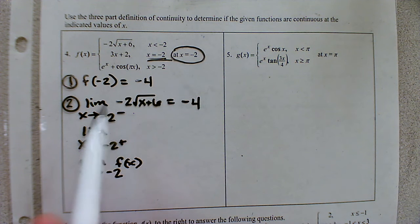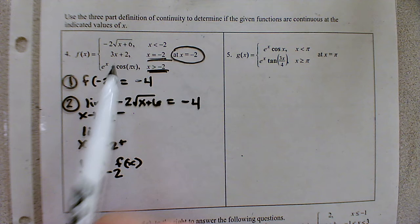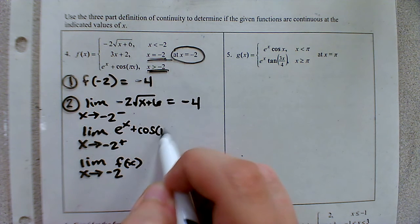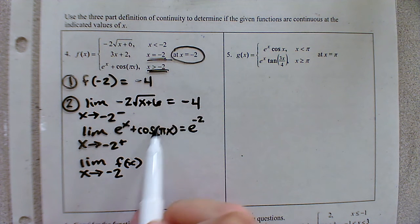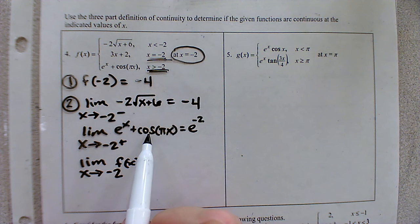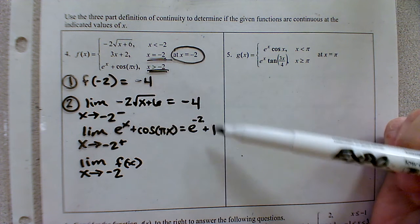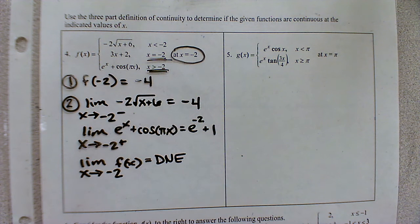Now to check the right-hand side, x values bigger than negative two correspond to the third equation. Direct substitution gives us e to the negative two times cosine of negative two pi. Since negative two pi means traveling backwards a full rotation on the unit circle, we're back to where we started, so cosine equals one. The left-hand limit is negative four, and clearly the right-hand limit is not negative four, so the overall limit doesn't exist.